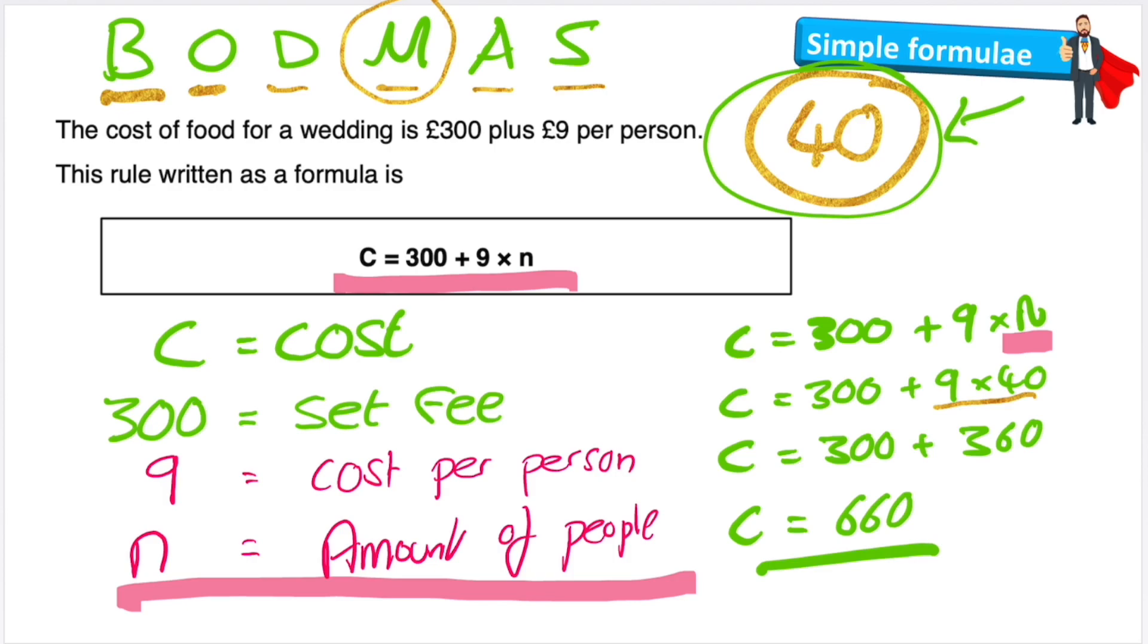Whether I invite just one person or 40 or 5 billion, I can still use this formula to find the total cost. Now we're starting to see how useful formulas can be.